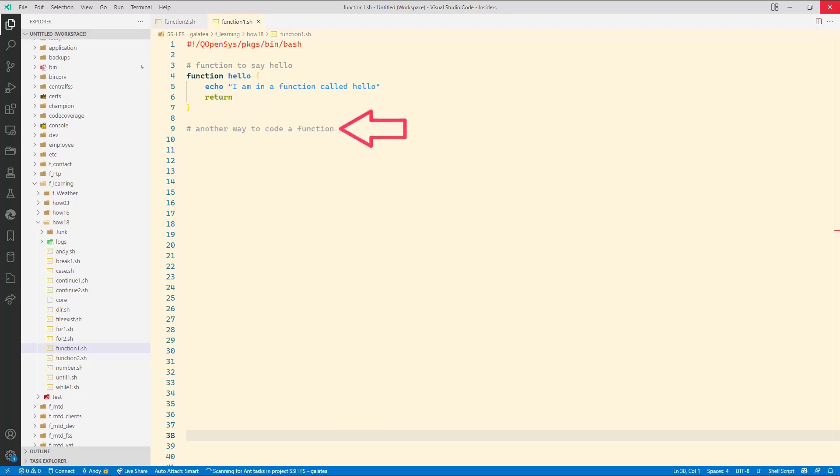On to the next function. Straight into the function name. This time with a couple of brackets. Then the same as above with curly braces. Another quick echo. A return. And end those braces. Now we have to execute both functions. Hello. Goodbye.